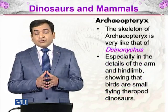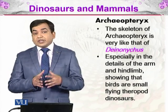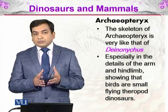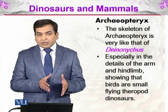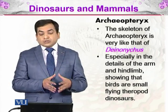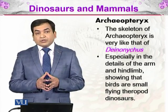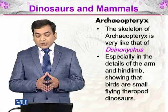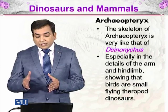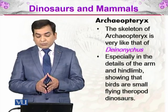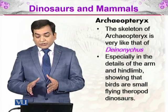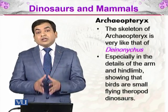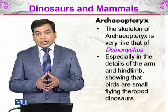Deinonychus is a very early dinosaur we have discussed previously. Especially in the details of the arms and hand, it shows that birds are small flying theropod dinosaurs — these were the earlier theropod dinosaurs.